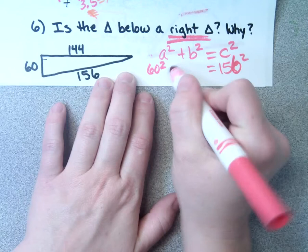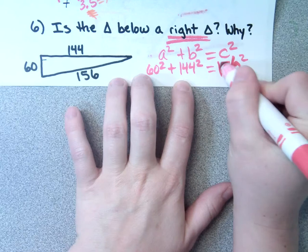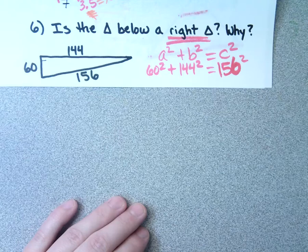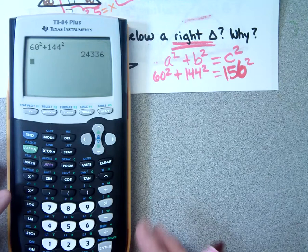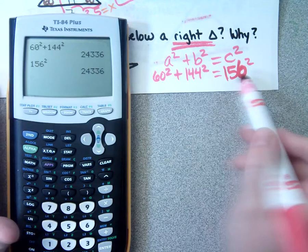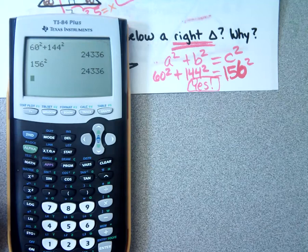If I take 60² + 144², I get 24,336. And if I take 156², I also get 24,336. Because they equal, the answer is yes, it's a right triangle. I noticed on the test when it asked if it was obtuse, acute, or right, a lot of people were just comparing A + B to C. But it's A² + B² compared to C². In order to know if it's a right triangle, they needed to equal — and they did.